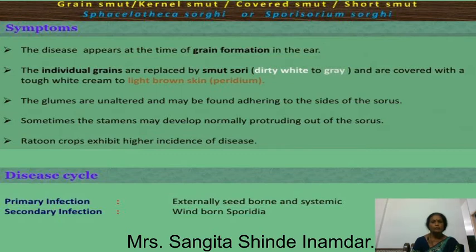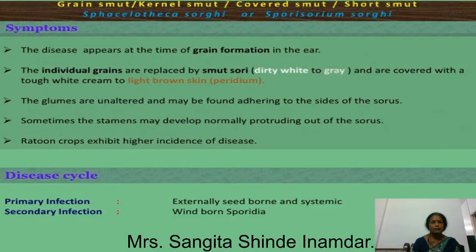The symptoms appear on the grain. These spores damage the ear of the Javar. These spores germinate to form sori instead of forming grains. These sori are in the primary stage and are green in color, but when severe infestation occurs the color changes and becomes black, known as smut sori.